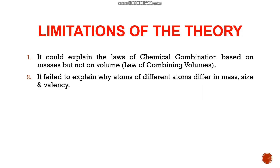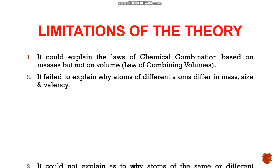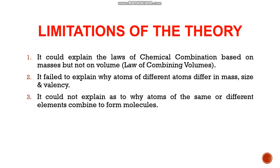Another limitation is that it failed to explain why atoms of different elements differ in mass, size, and valency. This means there should be a difference in the internal composition of atoms to account for different masses, sizes, and valencies. But since subatomic particles were not discovered at that time, this theory failed to account for the reasons why atoms of different elements differ in their properties. Also, this theory could not explain why atoms of the same or different elements combine to form molecules — he said atoms combine, but could not explain why.